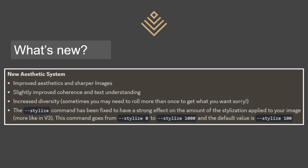Increased diversity — and sometimes you may need to re-roll more than once to get what you want, says David. So what this means is that if you are prompting, for example, for a model but you do not specify a gender, you may get both male and female models. It used to be with 5.1 that basically 99% of the time you would get females if you prompted 'model.' Now you should also get some male models into the mix. The quick fix is that you just prompt the gender.